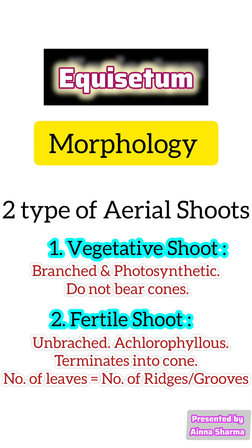In the fertile shoot, the number of leaves is equal to the number of ridges or grooves.